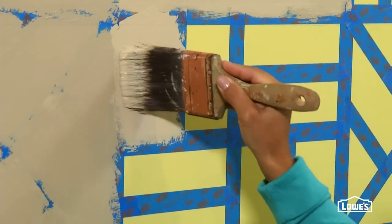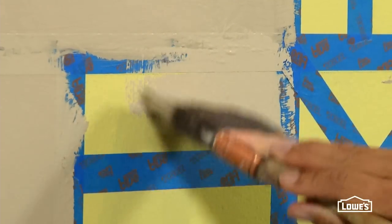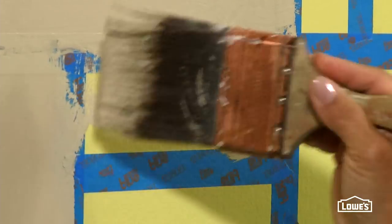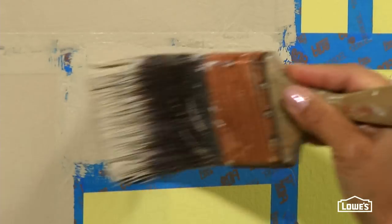Then go ahead and paint the whole design. When you can, it's best to brush from the tape toward the center of the space so you don't push paint up under the tape.